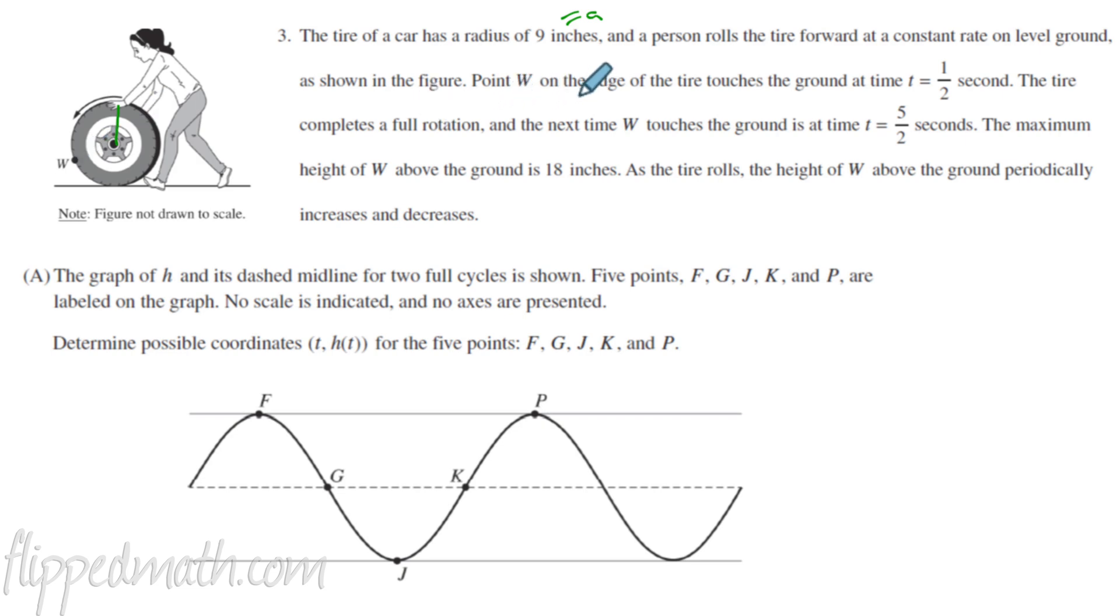Point W on the edge of the tire touches the ground at t equals one half second. So they have to give you some points in this problem. Here's one point that they give you. At one half, it's going to be at zero because it's zero feet above the ground. The tire completes a full rotation, and the next time it touches the ground is at five half second. This is five half second. It's going to be at zero again.